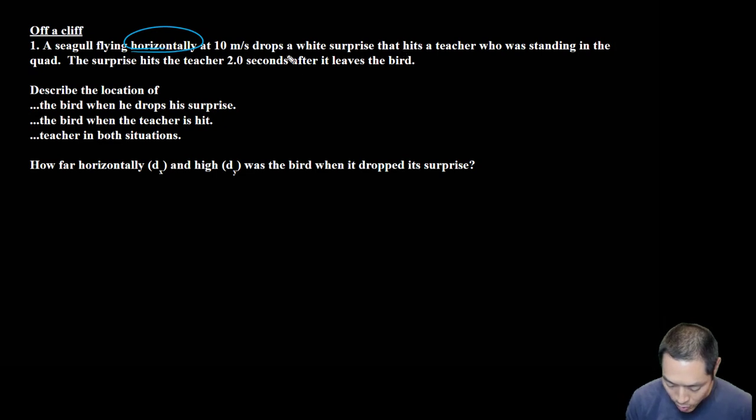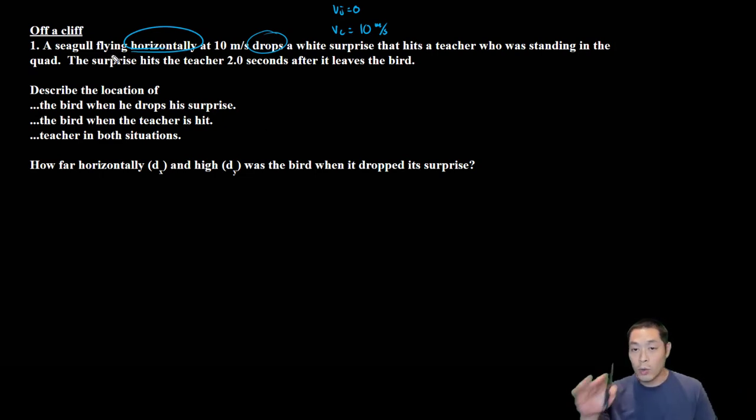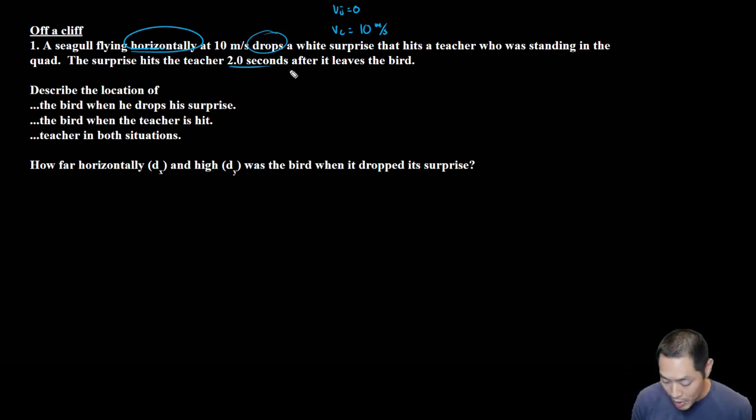When you're doing these problems, look for keywords. Here it says horizontally, so it's only moving in that direction, and you also see drop. Whenever something's off a cliff, there are two things you know: vi equals zero and velocity constant, in this case 10. These are the two knowns we get really quickly. In a problem like this, we always want to set it up with its vertical and horizontal components. I like to do this even before I do a drawing.